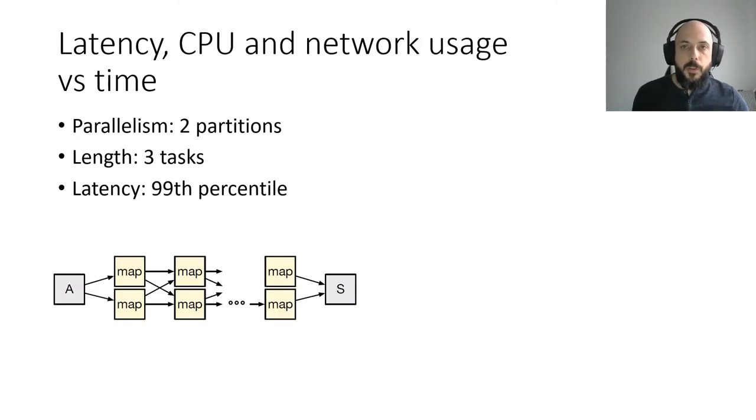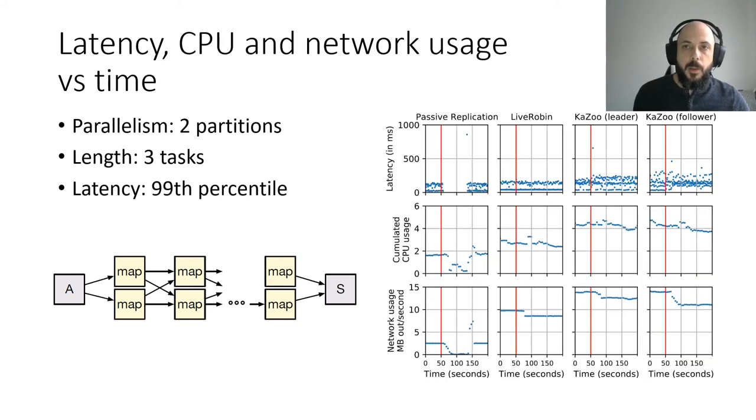We focus now on the task manager failure effects on the regular algorithm and on ours. In this experiment, for a two-partition three-task job, we observe the 99th percentile in latency, cumulative CPU usage and cumulative network usage versus time. This for passive replication, LiveRobin and Kazoo algorithms. In each graph, the x-axis represents the time with the provoked crash of a task manager at 50 seconds. We can see it with a red vertical line for each graph.